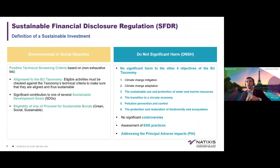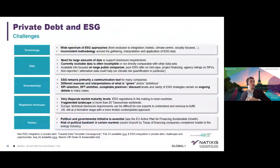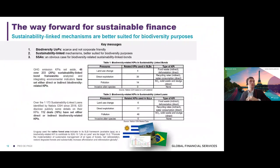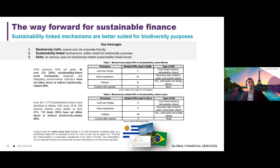On how we source biodiversity data: for the sustainability-linked bonds in our study, we used the LJX data hub. For the loans, we used our own data to analyze the KPIs. There are also plenty of open-source databases online that are really useful — not necessarily to assess individual companies, but at least to assess sectors, risks, and dependencies, and also to assess given infrastructure or geographies exposed to biodiversity-related risks or dependencies.